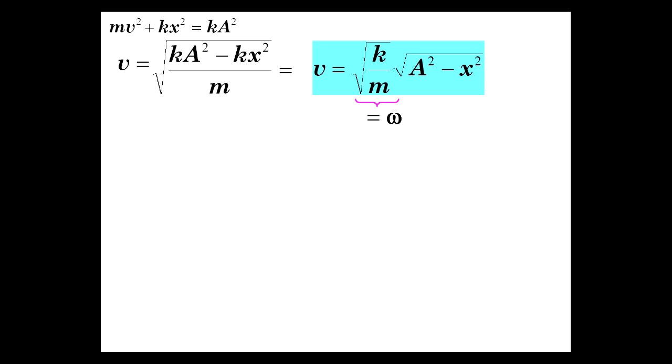Now we remember what square root of k over m is from the unit circle analysis. That was omega. And omega is 2 pi times the frequency, and that's 1 over the frequency is 1 over period, so we have 2 pi over T. Now at the endpoints, we know that we're not moving. So the energy is all in potential.